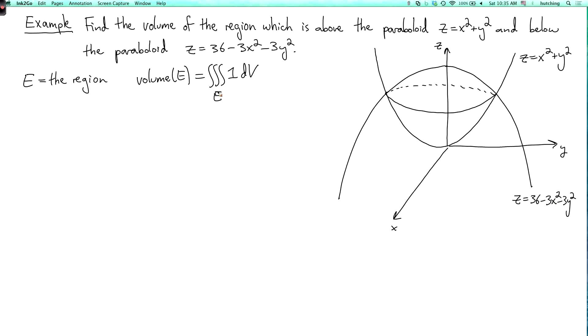So how are we going to evaluate this integral? Well, it's going to be nicer if we use cylindrical coordinates. So let's convert to cylindrical. What are these surfaces? This upper surface is just z equals r squared. And this lower surface is where z equals 36 minus 3r squared.